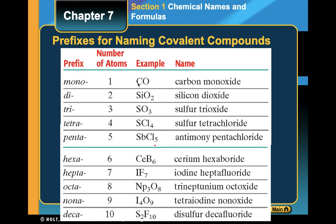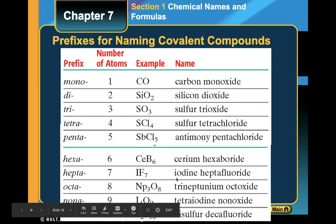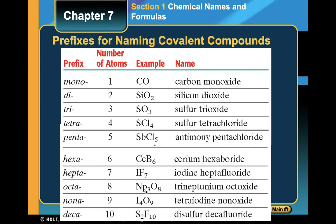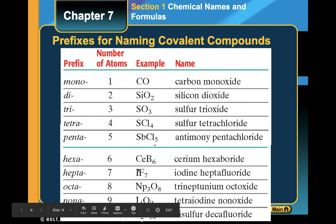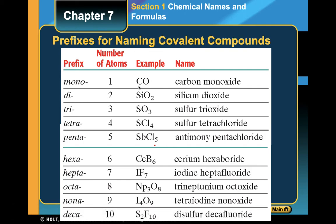We don't always have to indicate one for the first element, but the second one we will usually use mono. So silicon dioxide, not monosilicon dioxide. But if your compound has more than one of the first element — like tetraiodine nonoxide — that is when you have to indicate the prefix. So if you have more than one of your first element, you have to indicate how many there are. But you always have to indicate the second, third, and fourth elements, whichever ones come next.